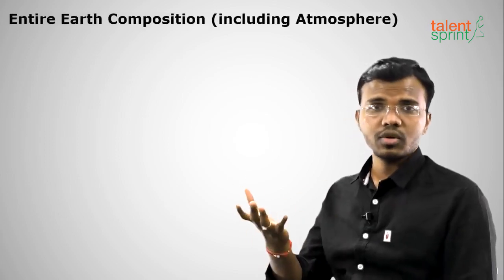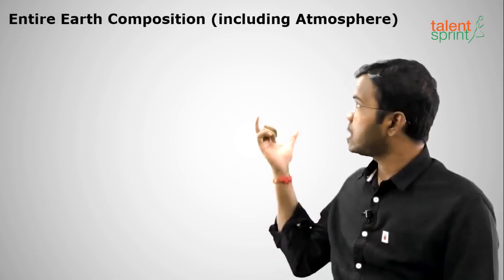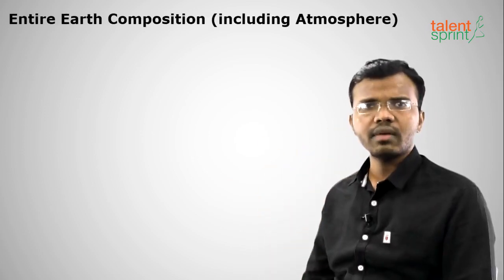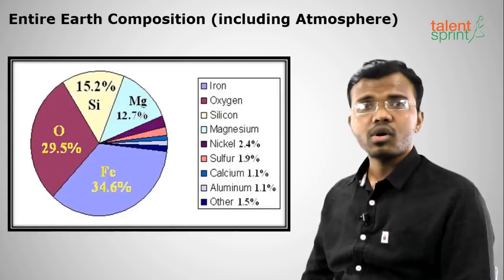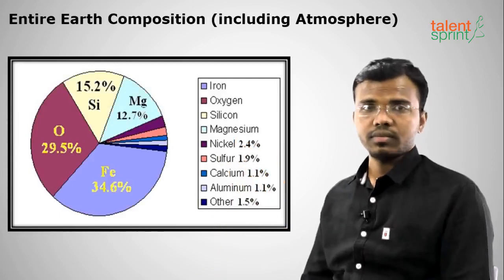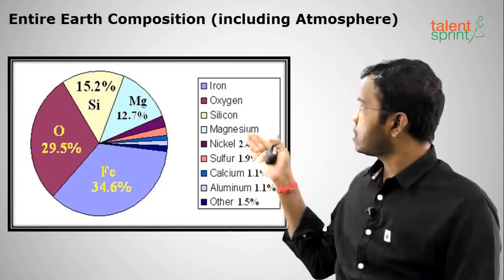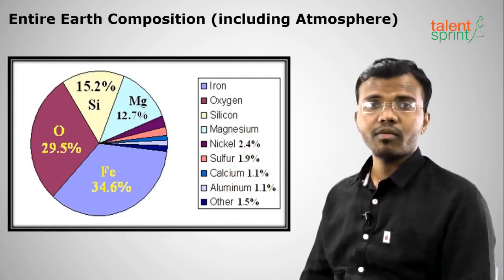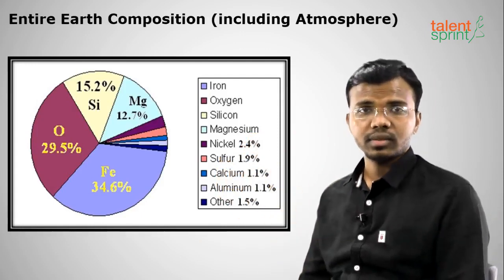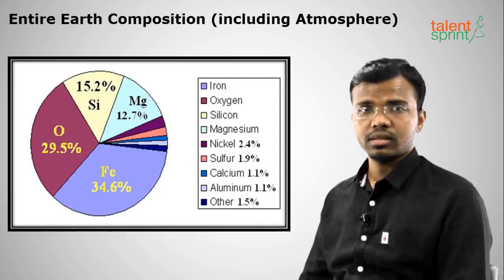Now we shall discuss the Earth's entire composition including the atmosphere. In the total Earth composition, the highest component is iron at 34.6 percent, followed by oxygen, then silicon, and then magnesium. So iron, oxygen, silicon, and magnesium are the top four elements in the total Earth's composition including both atmosphere and crust.